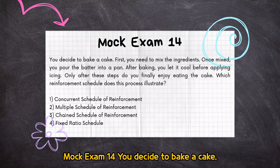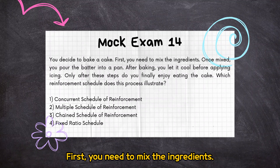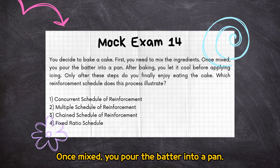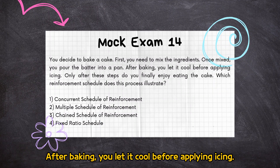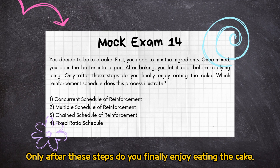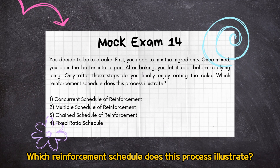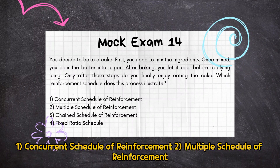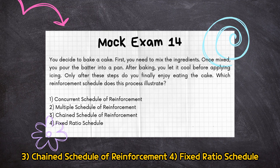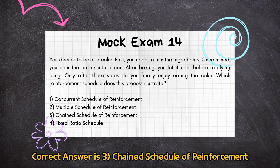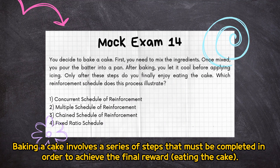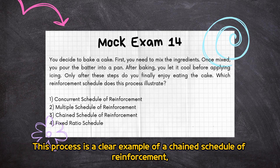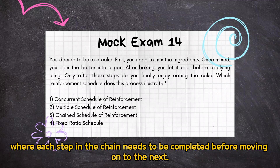Mock Exam 14: you decide to bake a cake. First, you need to mix the ingredients. Once mixed, you pour the batter into a pan. After baking, you let it cool before applying icing. Only after these steps do you finally enjoy eating the cake. Which reinforcement schedule does this process illustrate? (1) Concurrent schedule of reinforcement, (2) Multiple schedule of reinforcement, (3) Chain schedule of reinforcement, (4) Fixed ratio schedule. Correct answer is 3: chain schedule of reinforcement. Baking a cake involves a series of steps that must be completed in order to achieve the final reward — eating the cake. This process is a clear example of a chain schedule of reinforcement, where each step in the chain needs to be completed before moving on to the next.